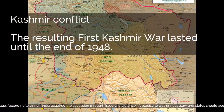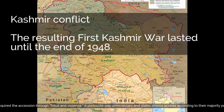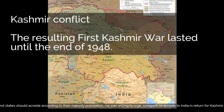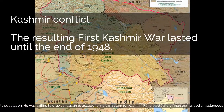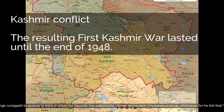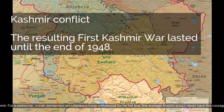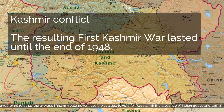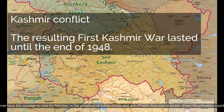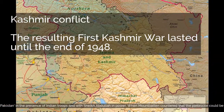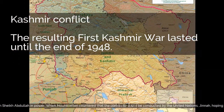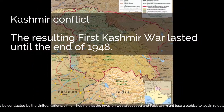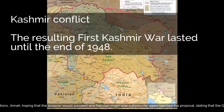He was willing to urge Junagadh to accede to India in return for Kashmir. For a plebiscite, Jinnah demanded simultaneous troop withdrawal, for he felt that the average Muslim would never have the courage to vote for Pakistan in the presence of Indian troops and with Sheikh Abdullah in power. When Mountbatten countered that the plebiscite could be conducted by the United Nations, Jinnah — hoping that the invasion would succeed and Pakistan might lose a plebiscite — again rejected the proposal, stating that the governors-general should conduct it instead. Mountbatten noted that it was untenable given his constitutional position, and India did not accept Jinnah's demand of removing Sheikh Abdullah.